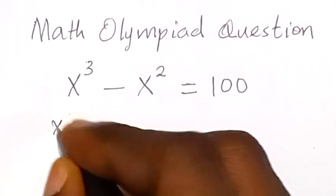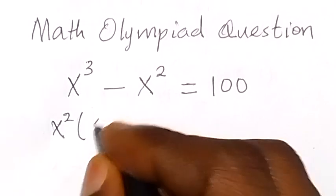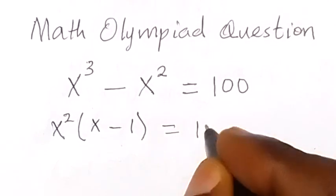x squared, so we have x squared out into bracket, what will be here with x now minus 1 left here, then equals to 100.